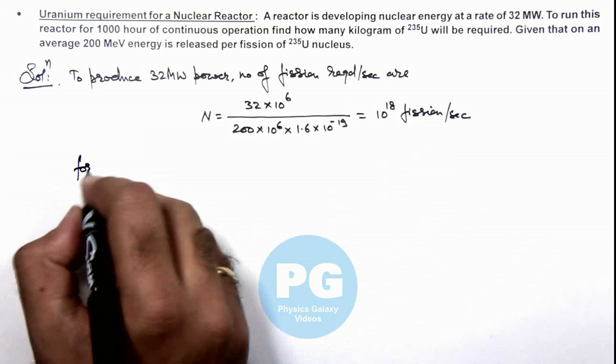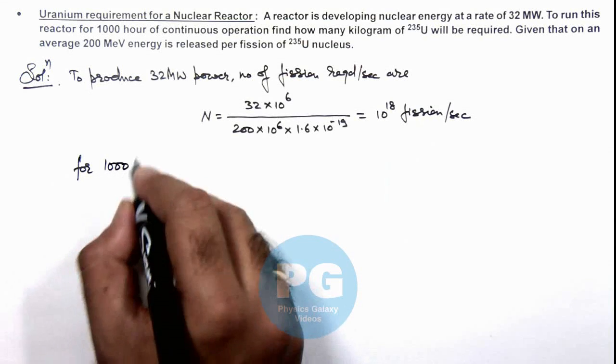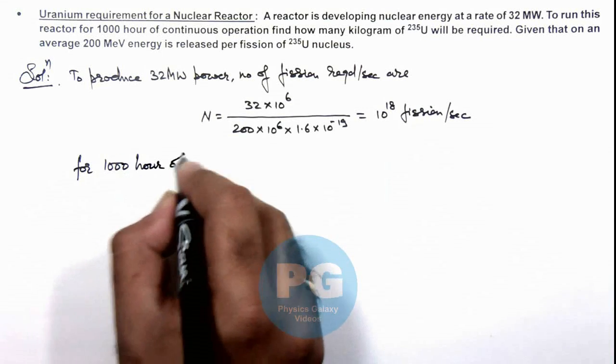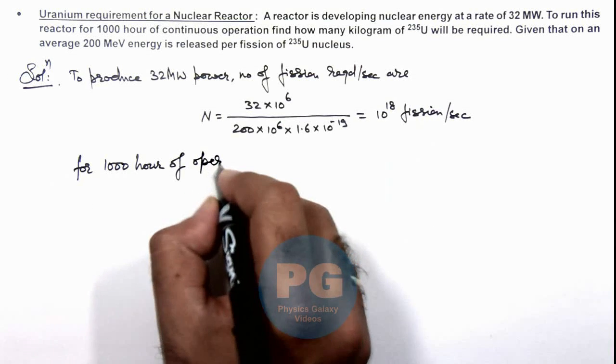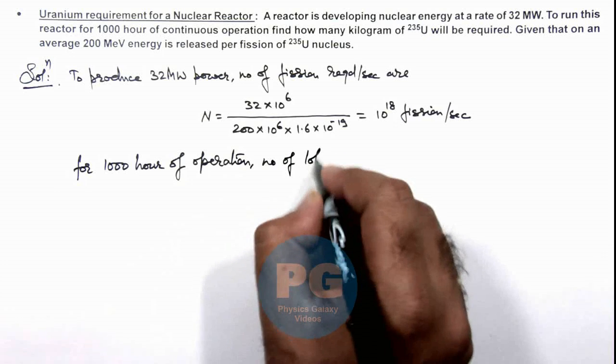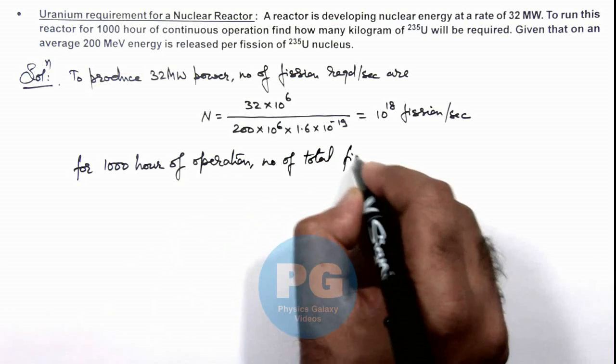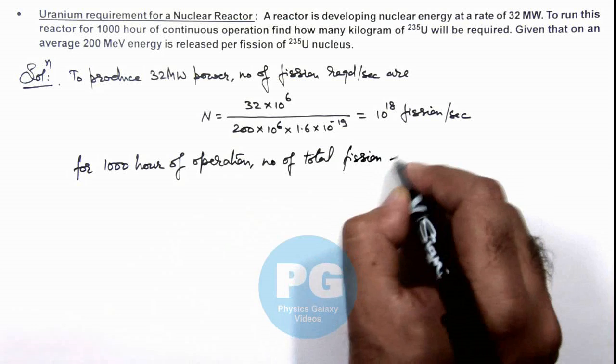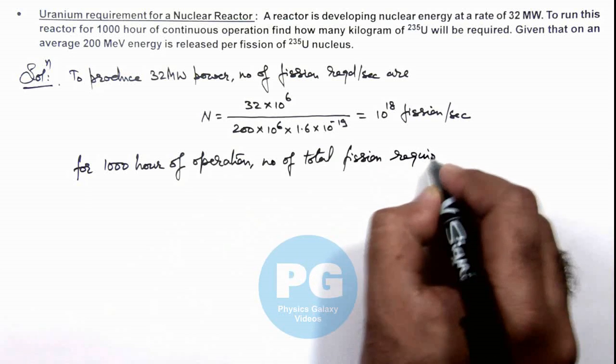So we can write: for 1000 hours of operation, number of total fissions required are...